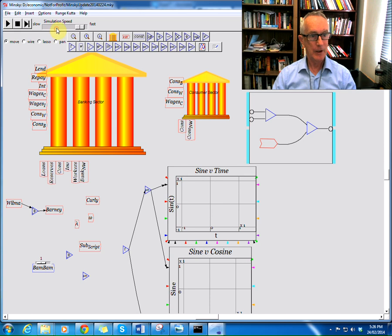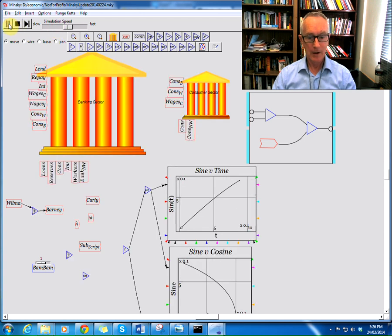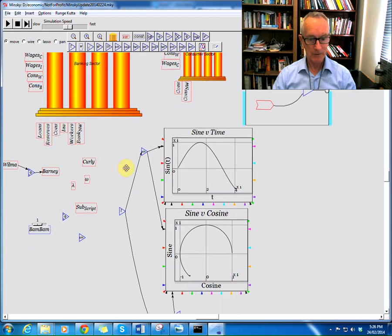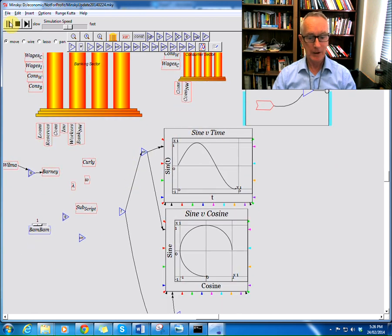So if I run this simulation, I'll slow it down a bit because it'll happen too quickly. The sine being simulated, and you can see if I just shift this up a bit so you can see the graph there properly. I'm also simulating sine against cosine doing an x, y plot.